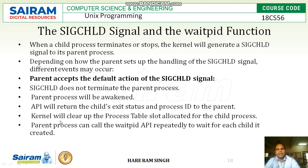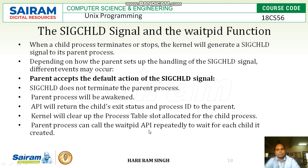Every process has a process table. In the parent's process table, the child process status is maintained. When the child process exits, the kernel clears the child process's allocated slot from the process table. The parent process can then call the waitpid API repeatedly to wait for each child it created.